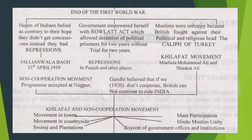These movements spread in towns, countryside, villages, and plantation areas. There was mass participation. People across India were participating. Hindu-Muslim unity was an exemplary thing. Boycott of government offices and institutions was a common feature of non-cooperation.